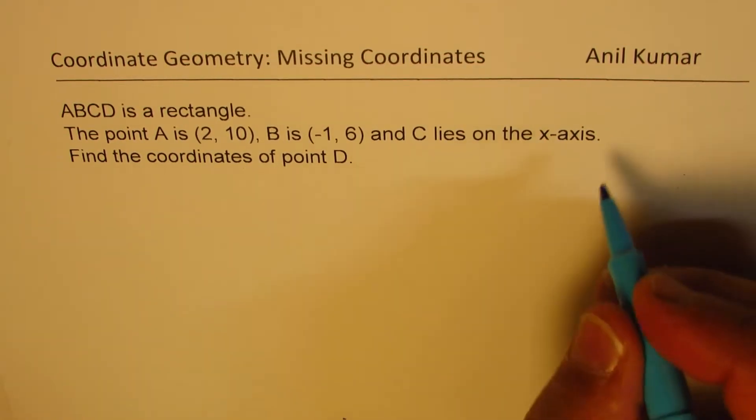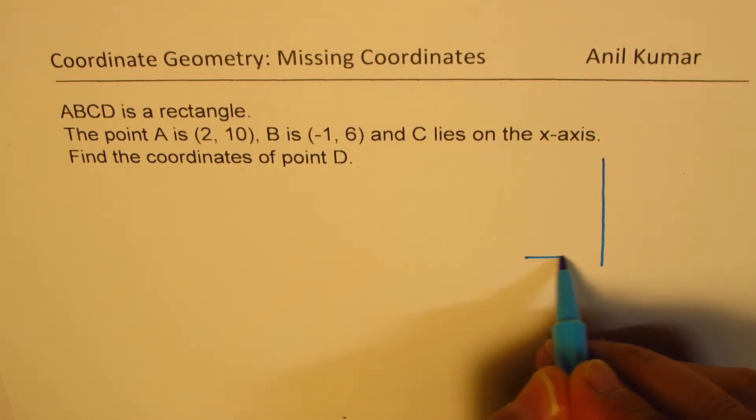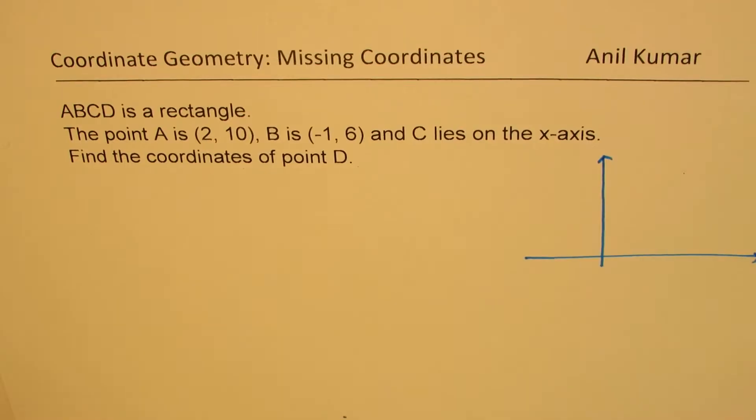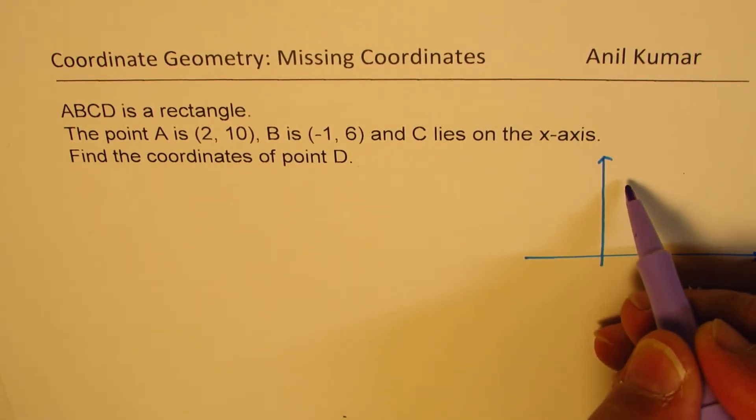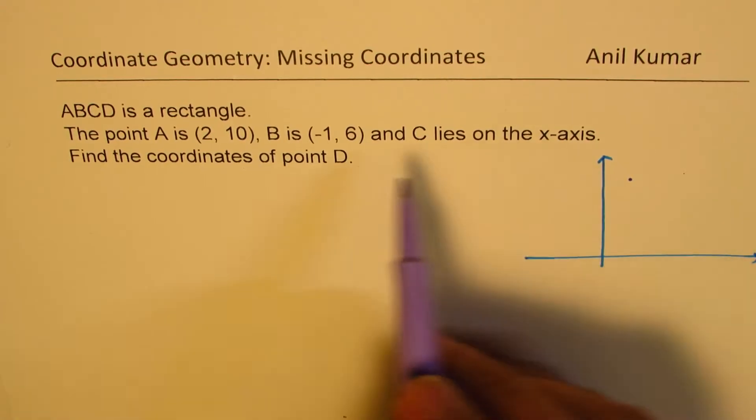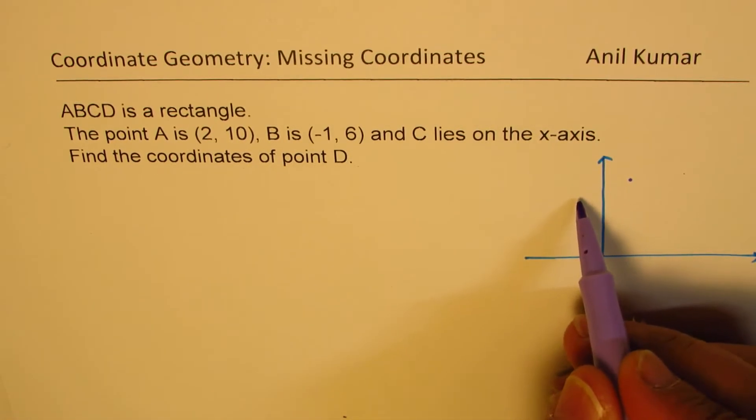Let's try to sketch this and then we'll continue with the solution. So let's say that is x and y axis. We are given point A as (2, 10), this is somewhere there. And point B is (-1, 6), let's say somewhere there. And then let's join them.